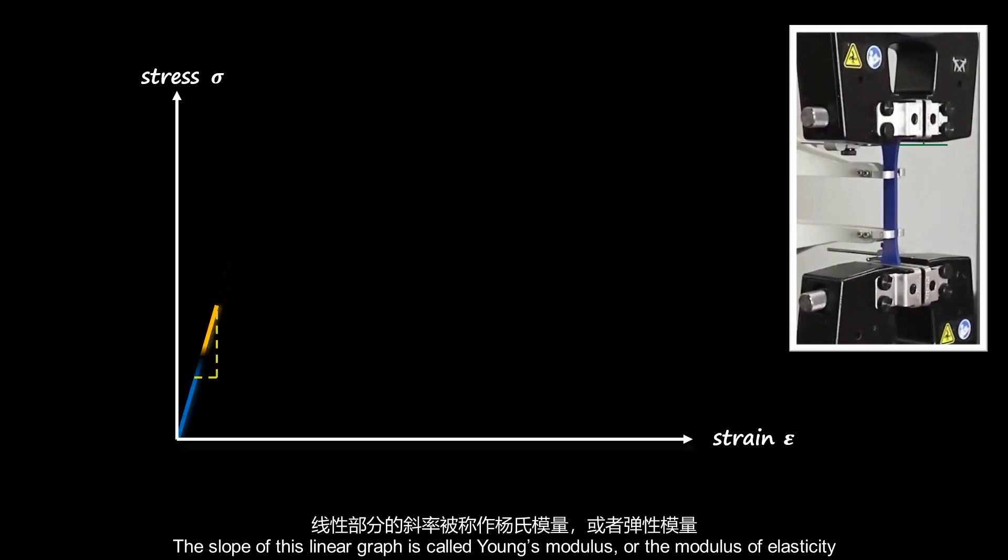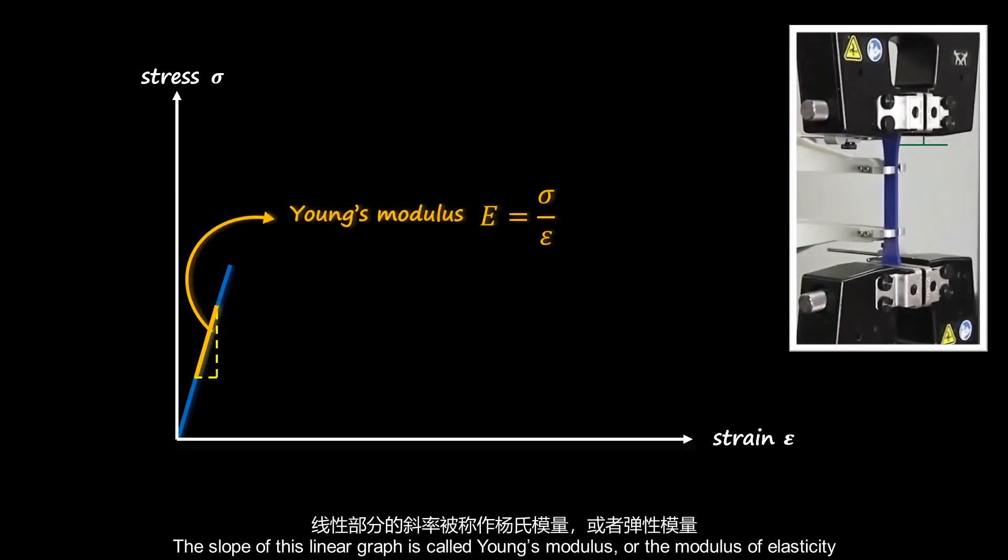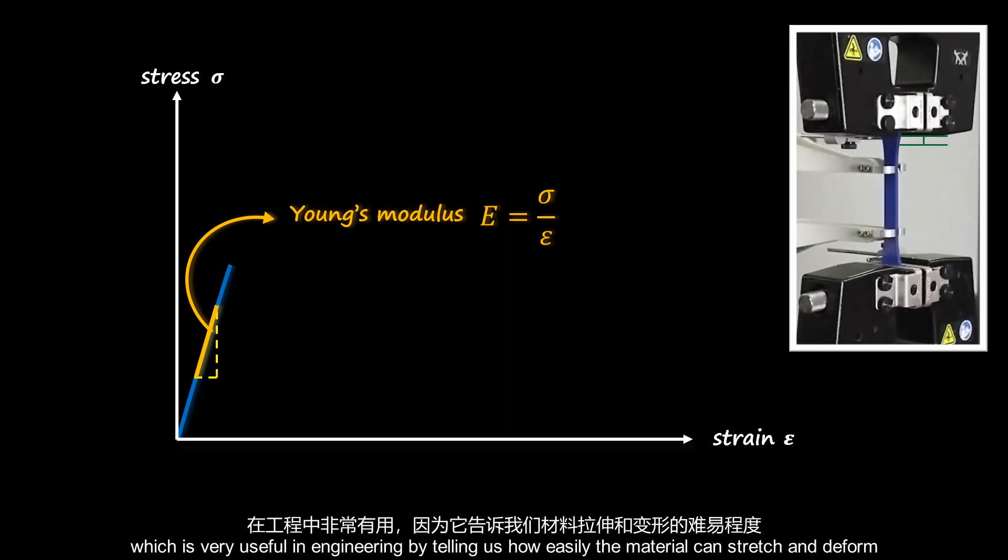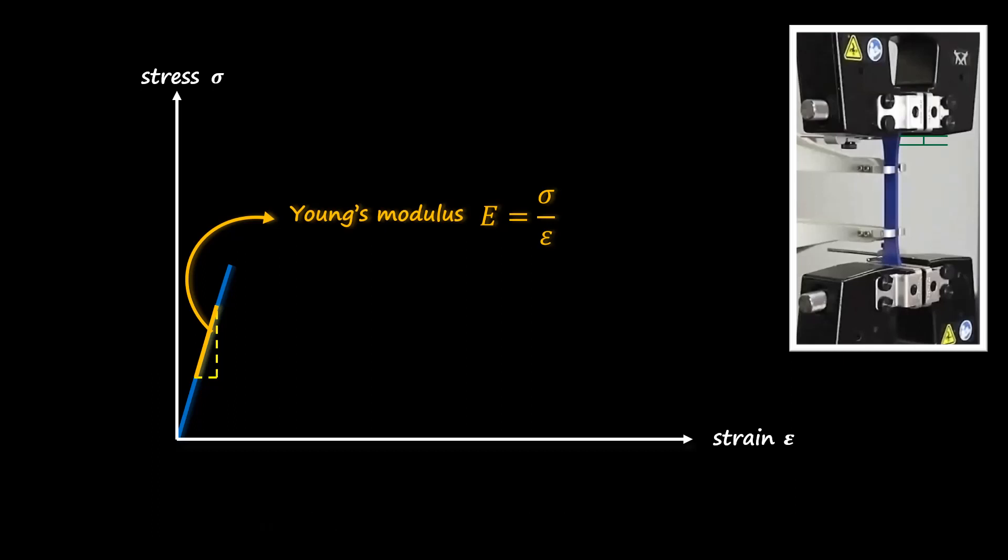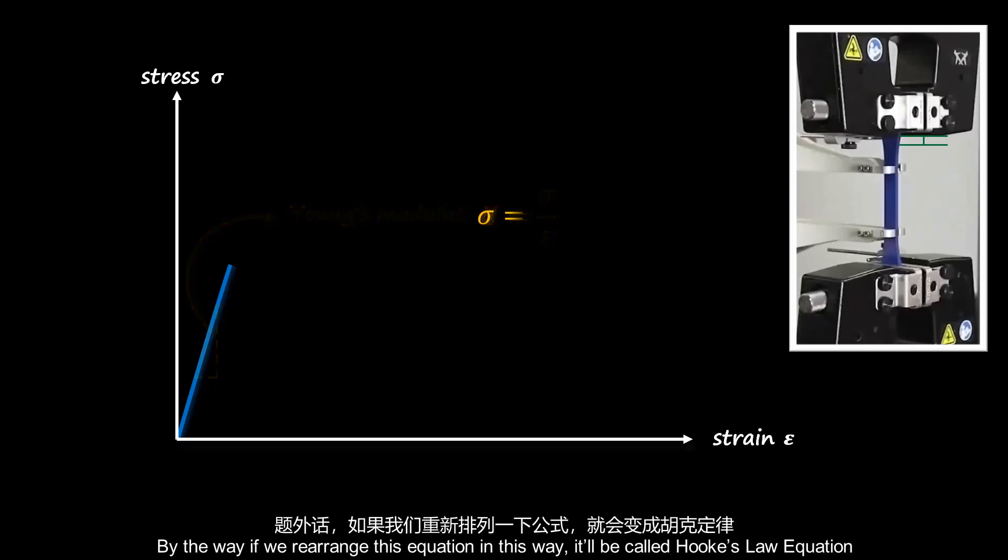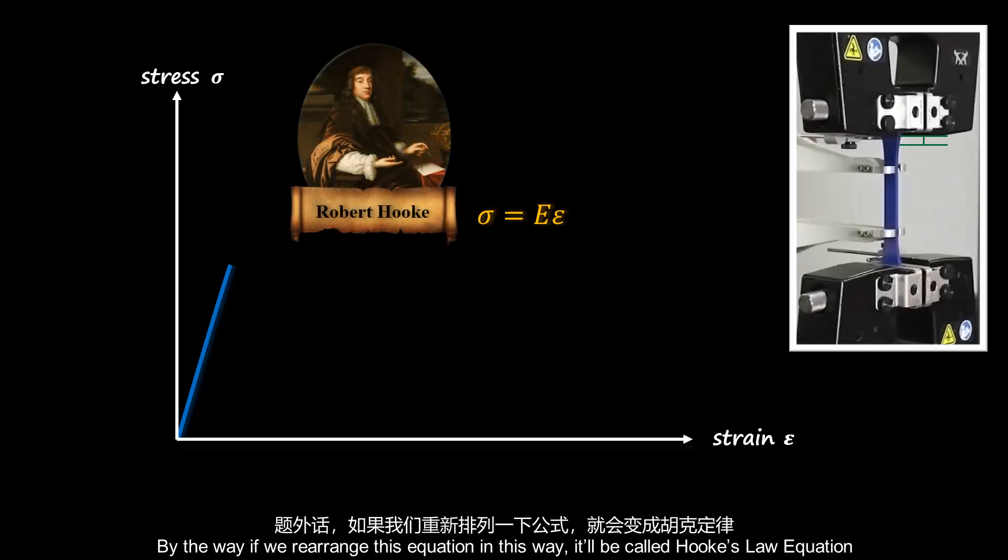The slope of this linear graph is called Young's modulus, or the modulus of elasticity, which is very useful in engineering by telling us how easily the material can stretch and deform. By the way, if we rearrange this equation in this way, it will be called Hooke's law equation.